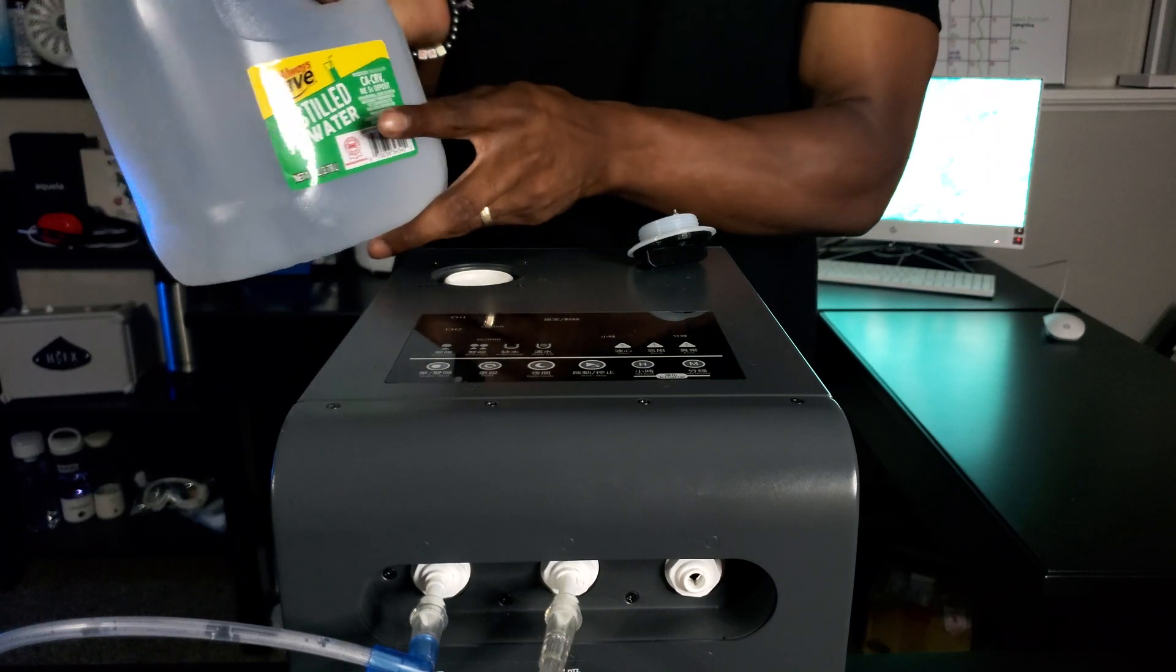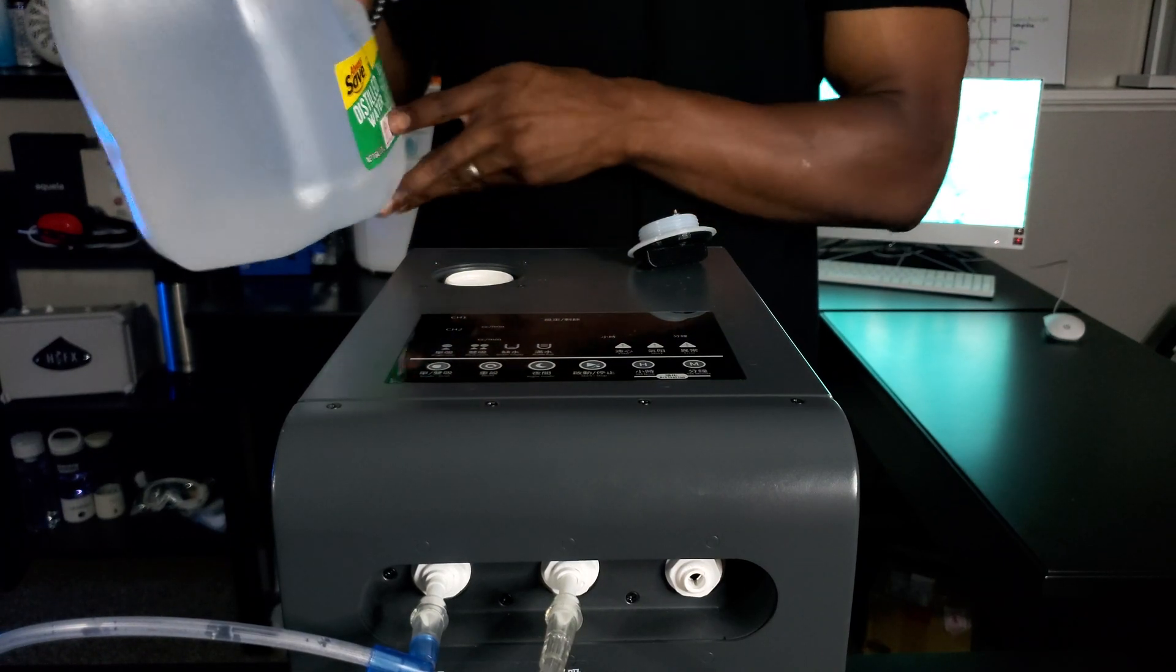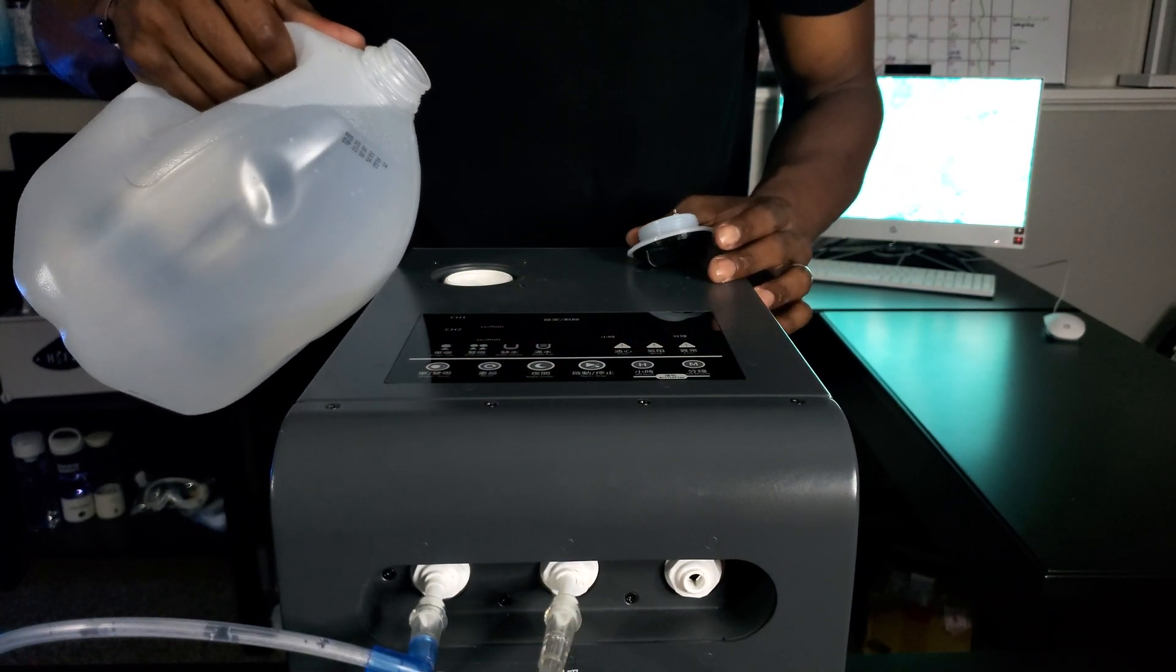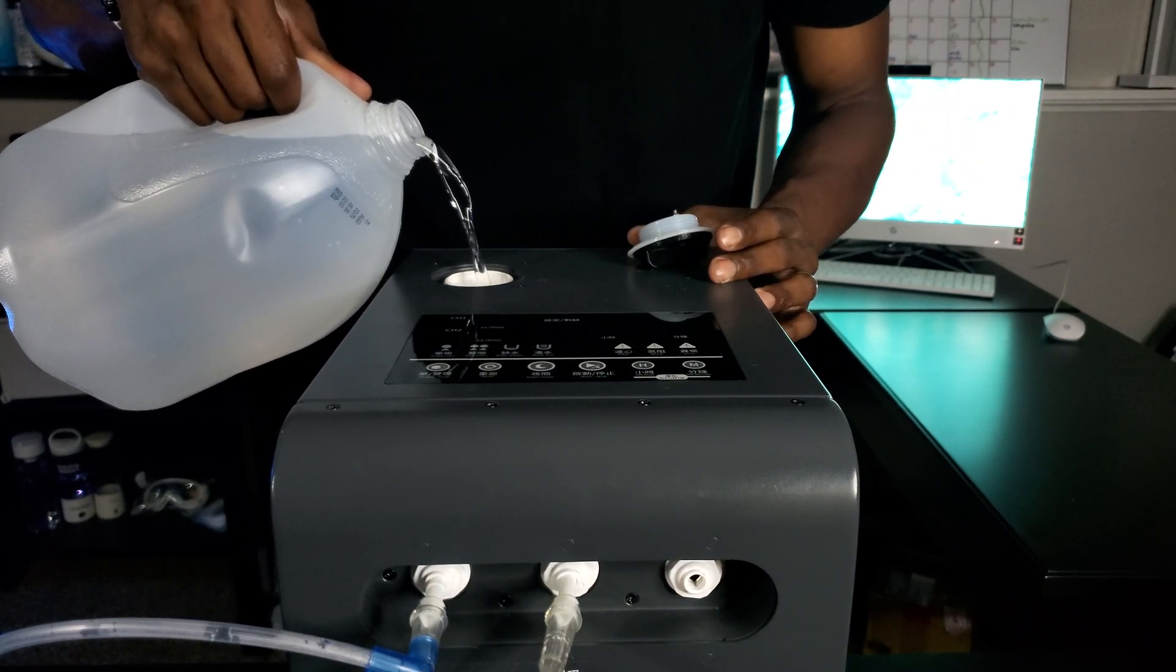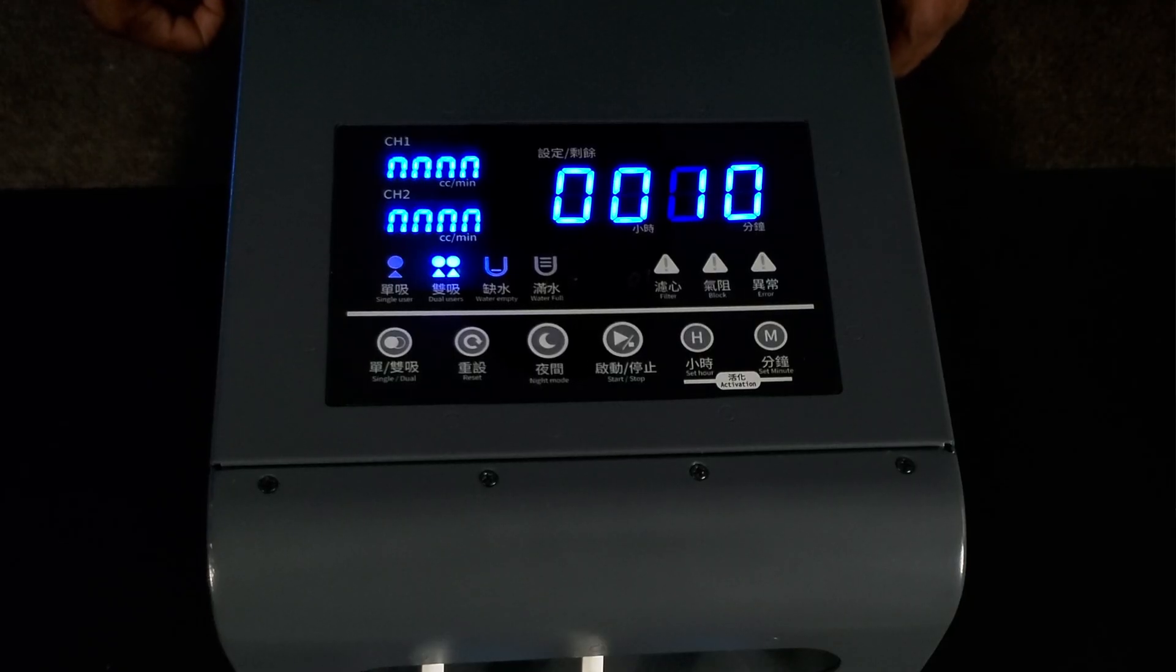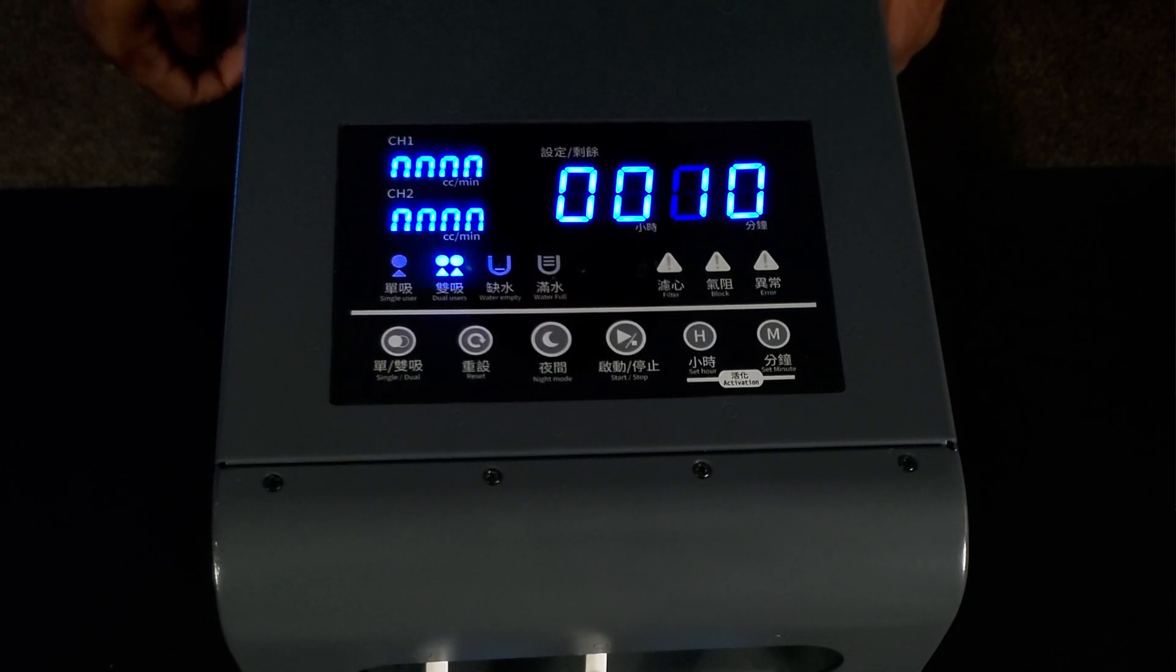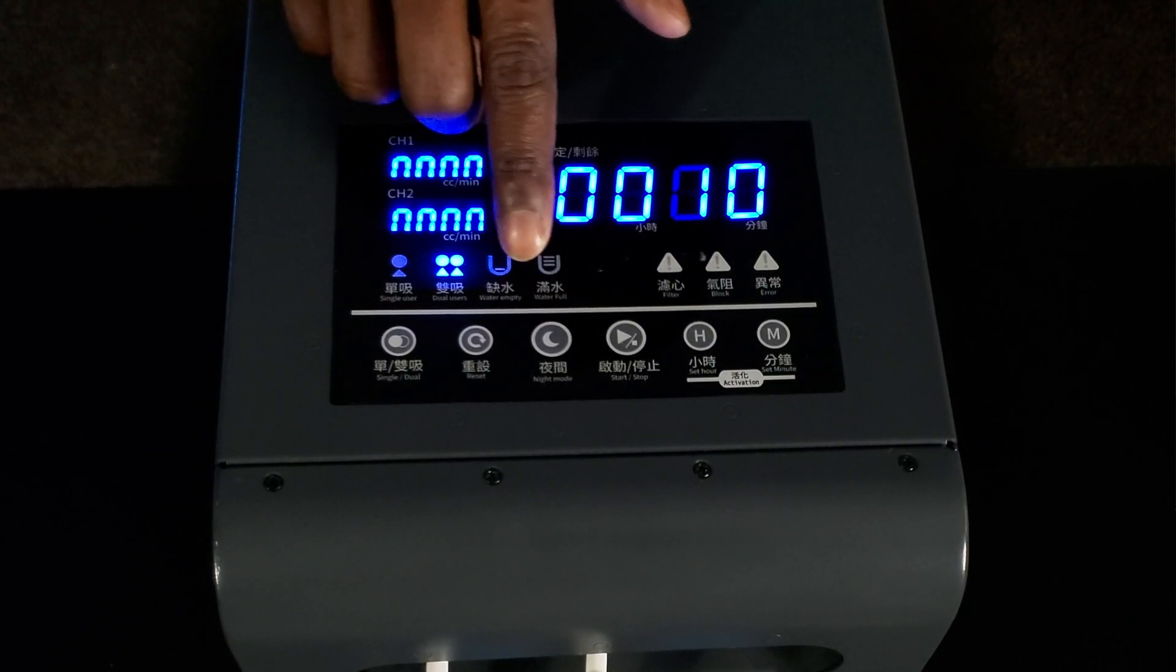On the top side of the device you will see the distilled water reservoir that's covered with this cap. This is where you place the distilled water for producing hydrogen gas. The device comes with a big digital touch display and six buttons on its control panel.